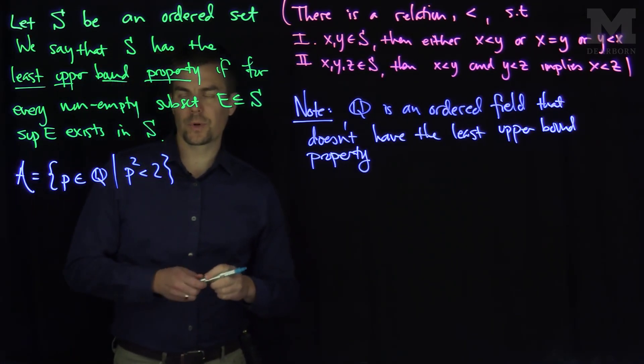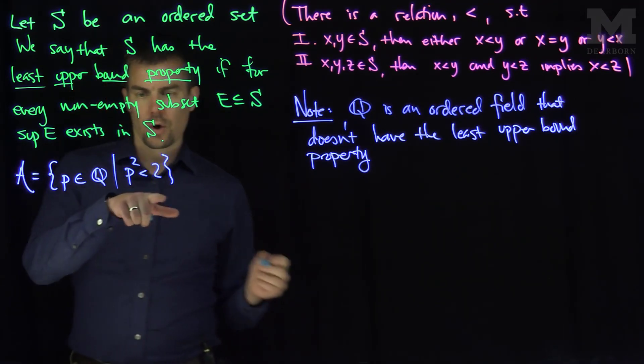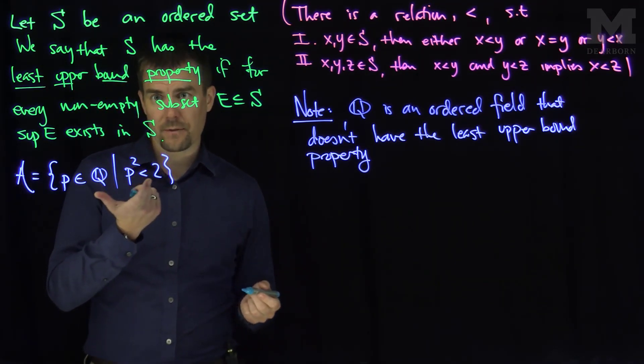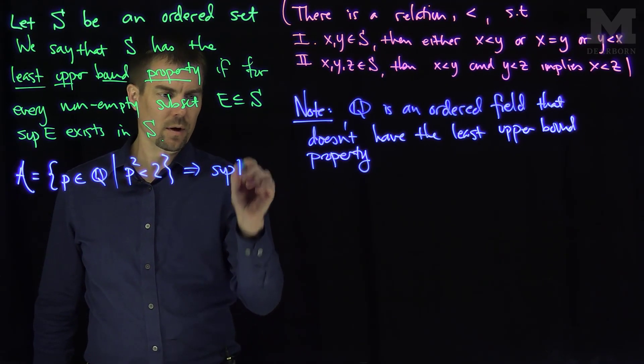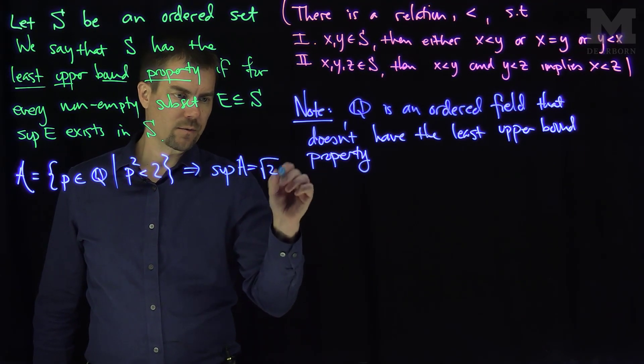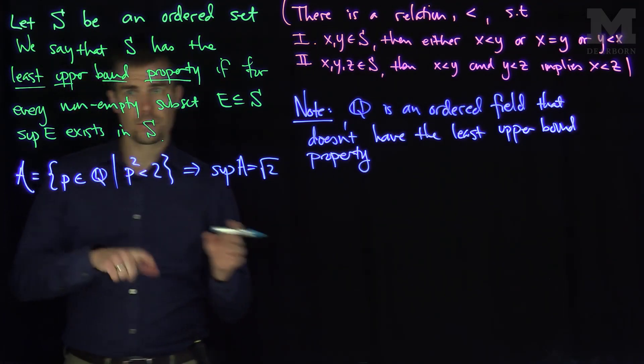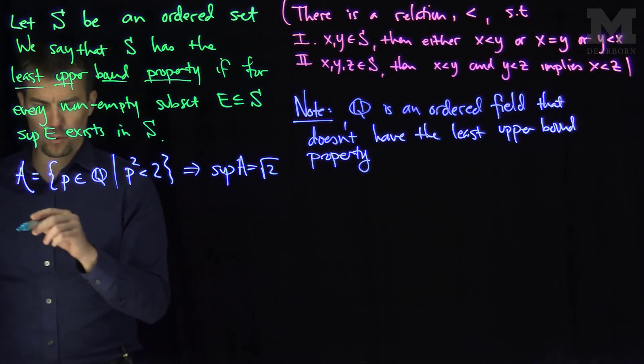And what we'll do is we can see that, in some sense, what the candidate for the supremum is. The candidate for the supremum, and we can see this, is the sup of A is the square root of two. And we classically know that root two is not a rational number, and the proof is simple of that.